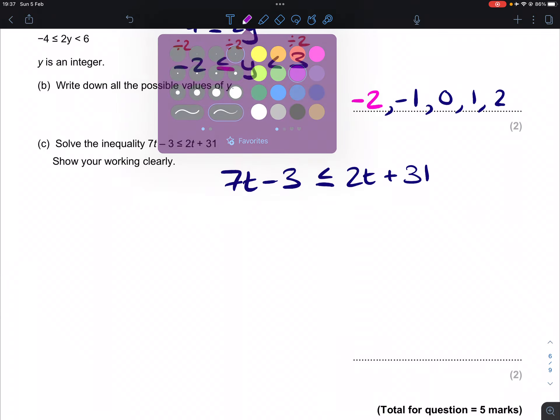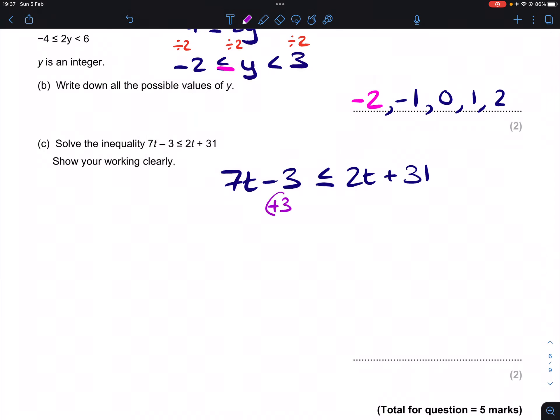The first step I would take is get all the letters on the left and the numbers on the right, purely because there's more letters on the left. So if we take away 2t from both sides and we add 3 to both sides, that will give us 5t on the left and 34 on the right.